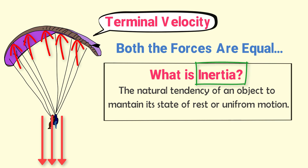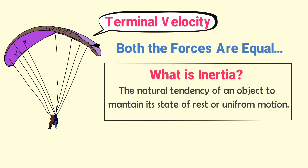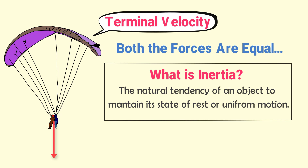Inertia tells the paratrooper: initially you were in downward motion, so you have to continue in downward motion. Therefore, the paratrooper falls with terminal velocity in the downward direction due to inertia. The third application of Newton's First Law of Motion in our daily life is the falling of fruits from a tree.